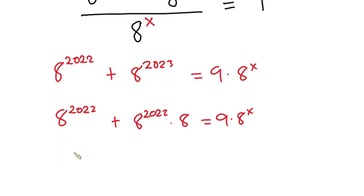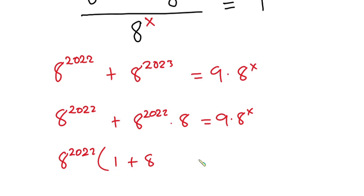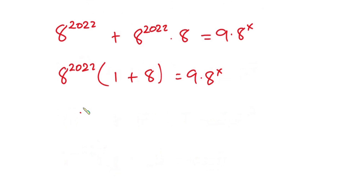So we have a to the power 2022 times (1 plus a), and this is equal to 9 times a to the power x. Now from here we have a to the power 2022 times 9 is equal to 9 times a to the power x.